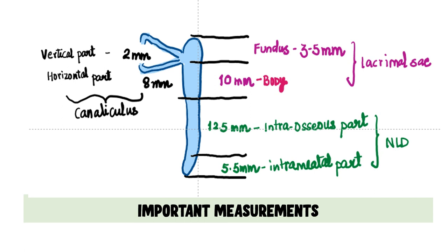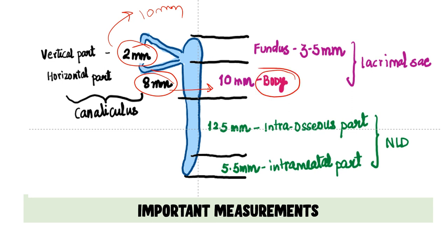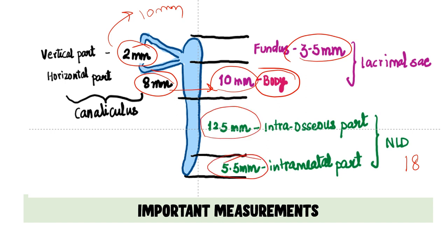To summarize the key measurements: the canaliculus has a vertical part of 2 mm and a horizontal part of 8 mm, totaling 10 mm. The lacrimal sac body is also about 10 mm and the fundus is about 3 to 5 mm. The nasolacrimal duct total length is 18 mm — intraosseous 12.5 mm and intramucosal 5.5 mm.